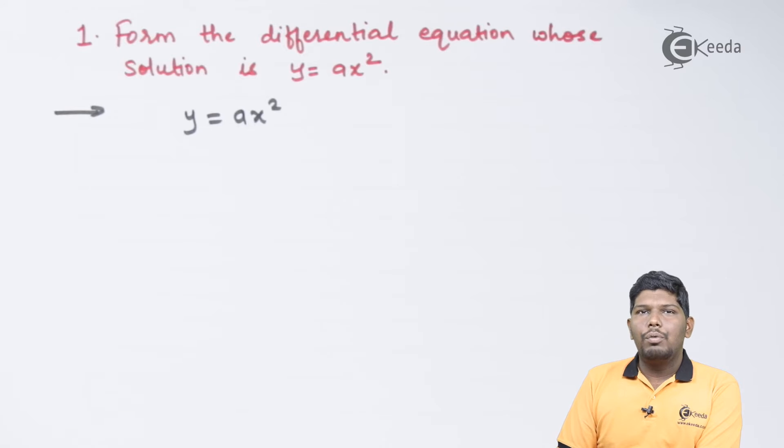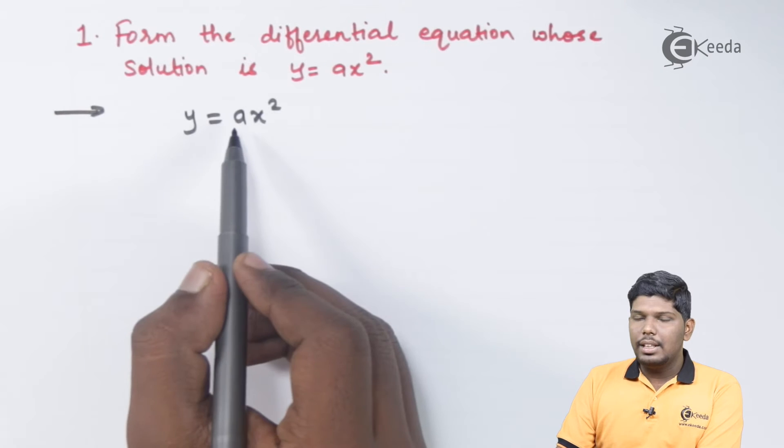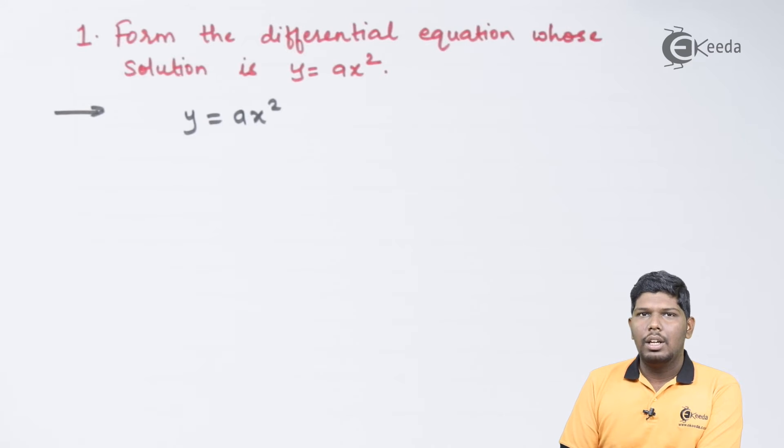In the previous video we have seen the steps that are required to form a differential equation whenever we have an arbitrary constant. To find a differential equation, we are going to eliminate that arbitrary constant. As you can see in the given equation, the arbitrary constant is a. Only one single arbitrary constant is present, therefore we will differentiate this equation only one time. So let us differentiate this equation with respect to x.